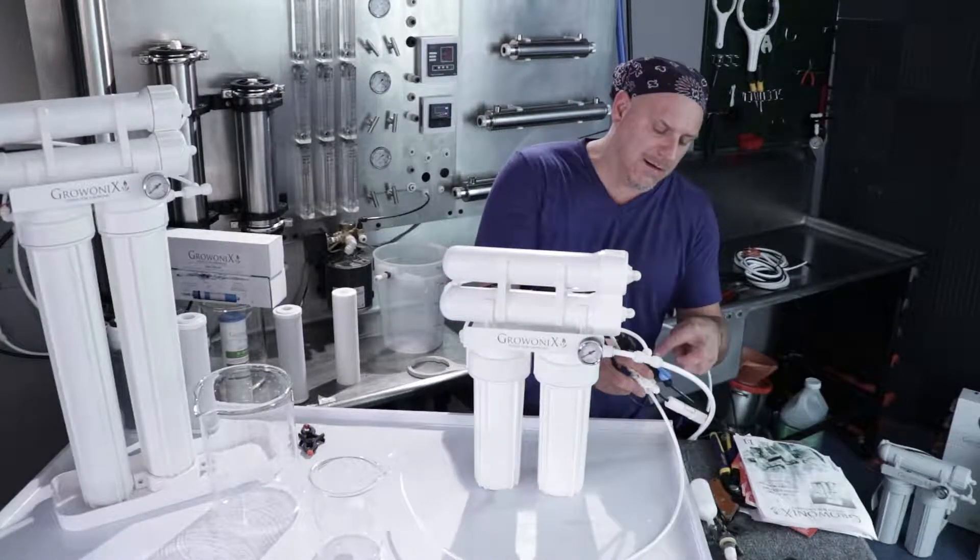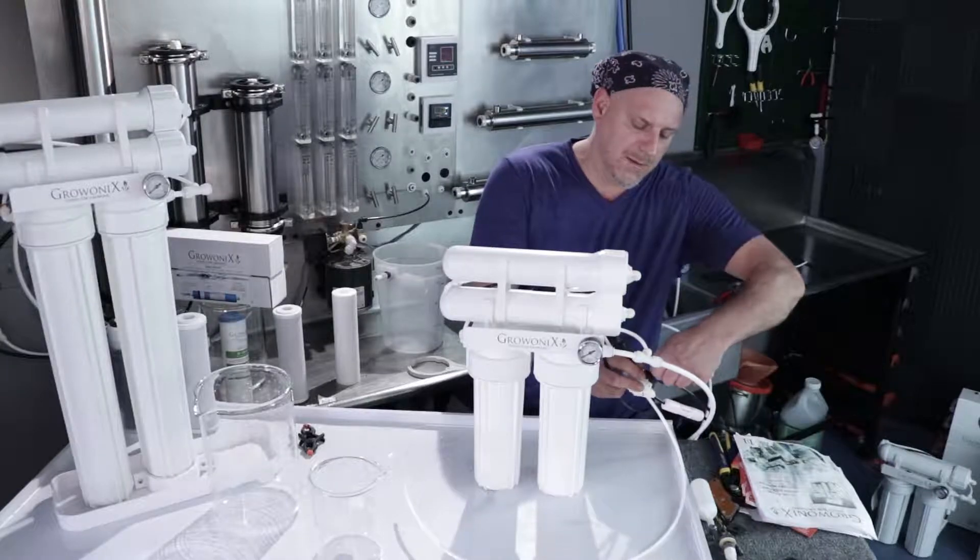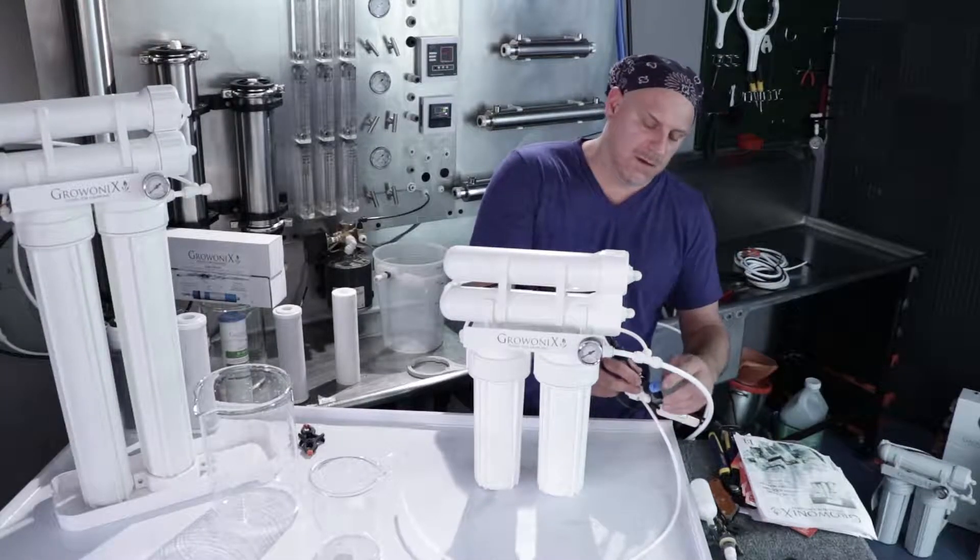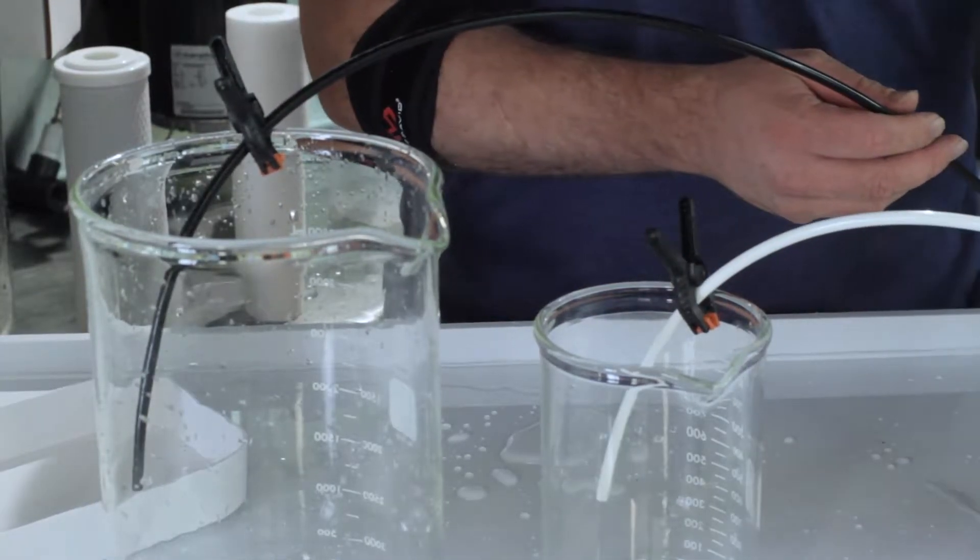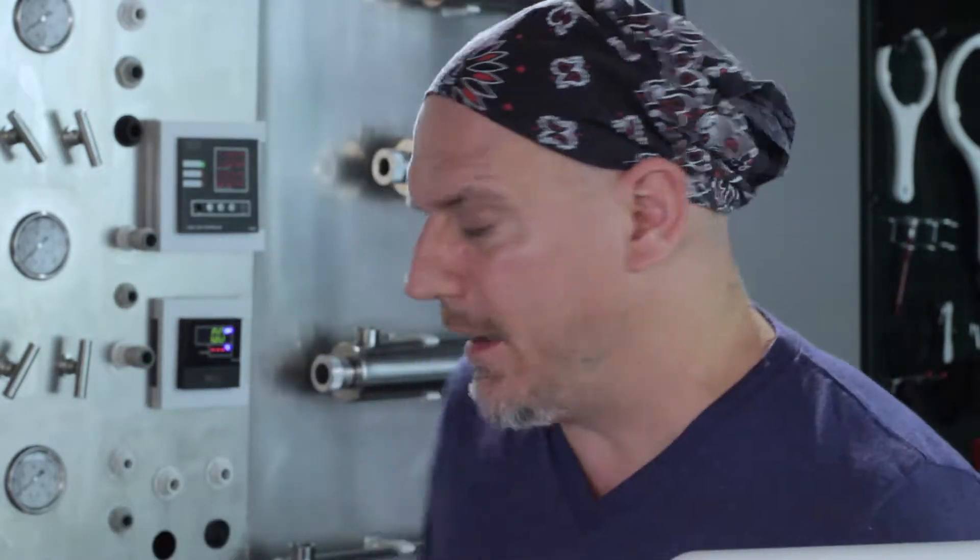These units have a flush valve, so we're going to make sure the flush valve is open. That's parallel to the drain line, perpendicular is closed. So now the flush valve is open, what I'm going to do is turn the water supply on slowly once again. I don't want to hammer these housings with full water pressure, and I'm going to hear the water flowing up through the pre-filters and moving through the membrane housing.